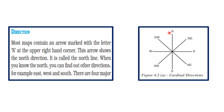Between the cardinal directions there are intermediate directions. Between north and east is northeast; between north and west is northwest; between south and west is southwest; and between south and east is southeast. So northeast, northwest, southwest, and southeast are the intermediate directions.